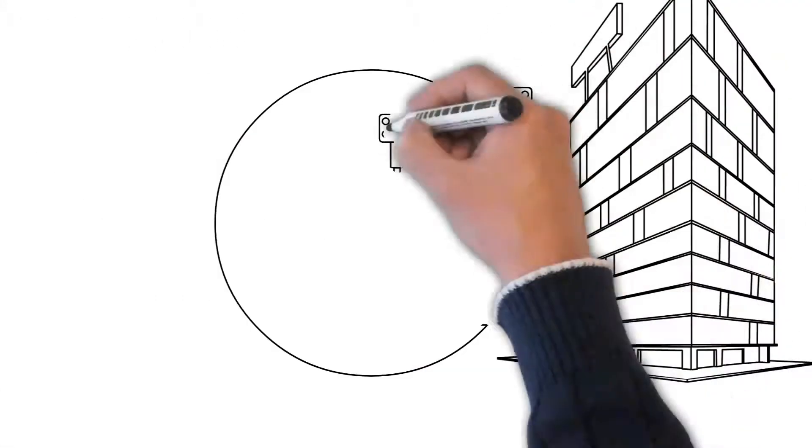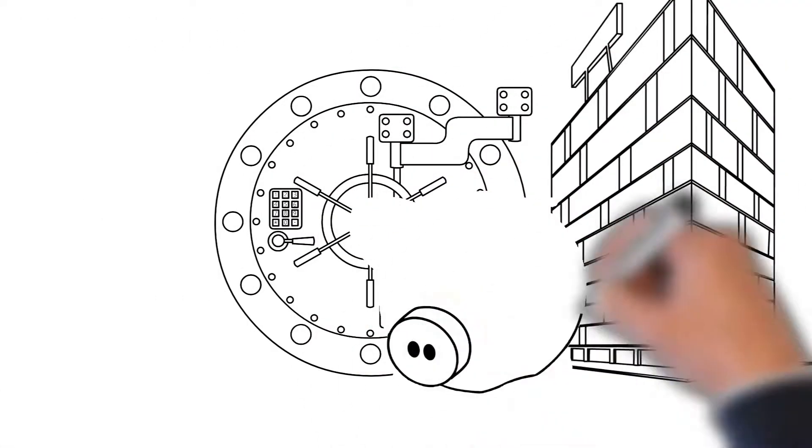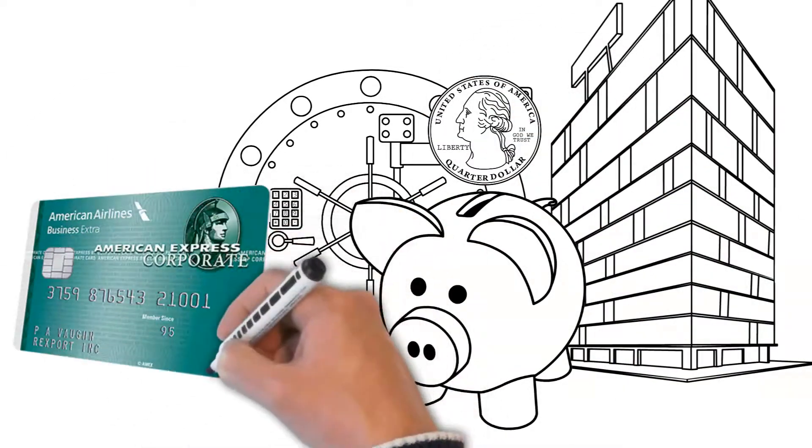A creditor can be a supplier like Office Depot, or a lender like Navy Bank, Navy Federal Credit Union, or American Express.